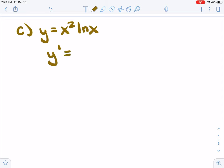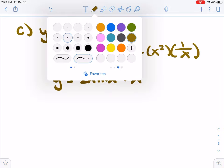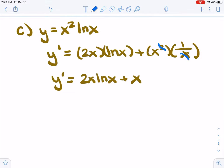The product rule says we take the derivative of the first thing times the second thing plus the first thing times the derivative of the second thing. So y prime is 2x natural log of x plus x when I cancel out the x's there. So that's it. That's the answer for that one.